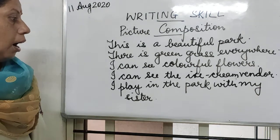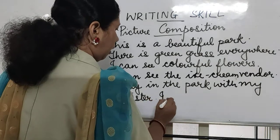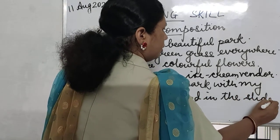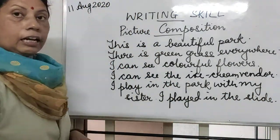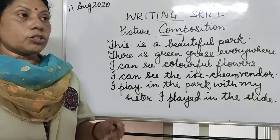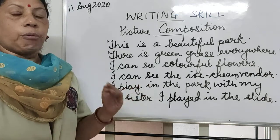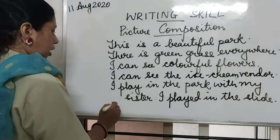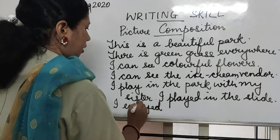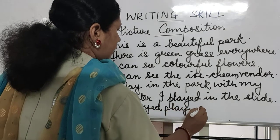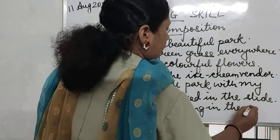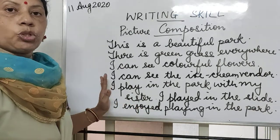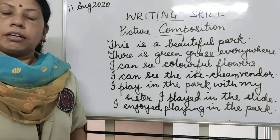You can write more. 'I played in the slide.' Here I have used 'played' which is past tense, and that is also correct. So by using simple sentences I have started framing and now I have come to past tense as well. Then: 'I enjoyed playing in the park.' So we all enjoy playing in the park — we have framed so many sentences.